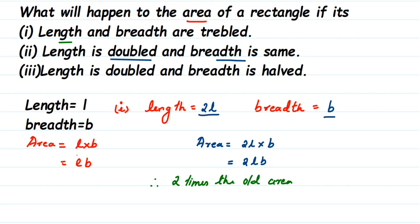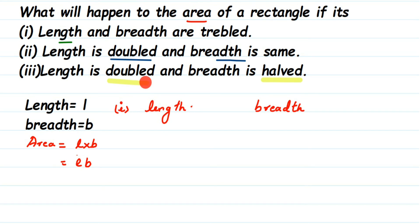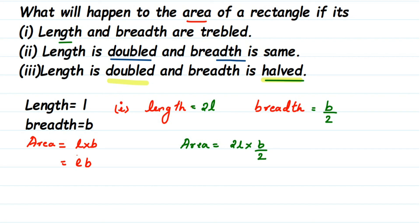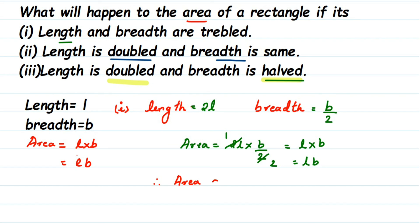For the third condition: length is doubled and breadth is halved. So length becomes 2L and breadth becomes B divided by 2. The area will be 2L into B/2. We have a 2 in the numerator and denominator, so they cancel. We get L into B, which is LB — the same as the original area. Therefore, when length is doubled and breadth is halved, the area does not change; it remains the same.